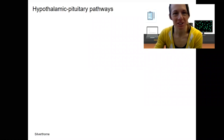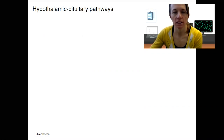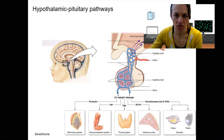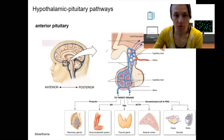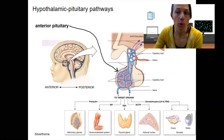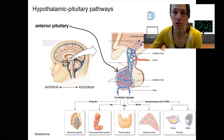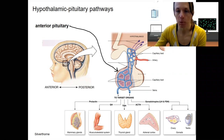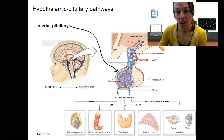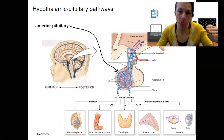Next video is still on hypothalamic-pituitary pathways. We've got the front of the brain over here and the back, so this is going to be our anterior pituitary. You already know about the signaling from the hypothalamus to this gland, but we're going to do it again with more specifics now. There's a common pattern that we'll see with this.